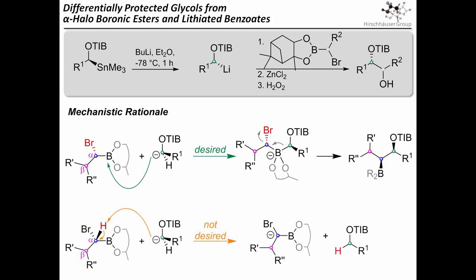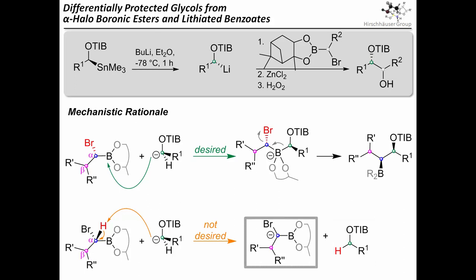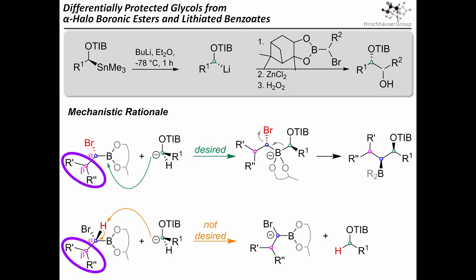Alpha-bromoboronates could also be deprotonated in the alpha position, which would lead to the definitive destruction of our donor component. We observed the formation of the protonated benzoate even when the donor was generated by tin-lithium exchange. But the acceptor component would suffer as well, as further decomposition beckons, and even reprotonation would lead to epimerization and thus a loss of diastereofidelity. Considering these two competing mechanisms, it stands to reason that some steric bulk in the beta position is quite useful as it suppresses this undesired side reaction.